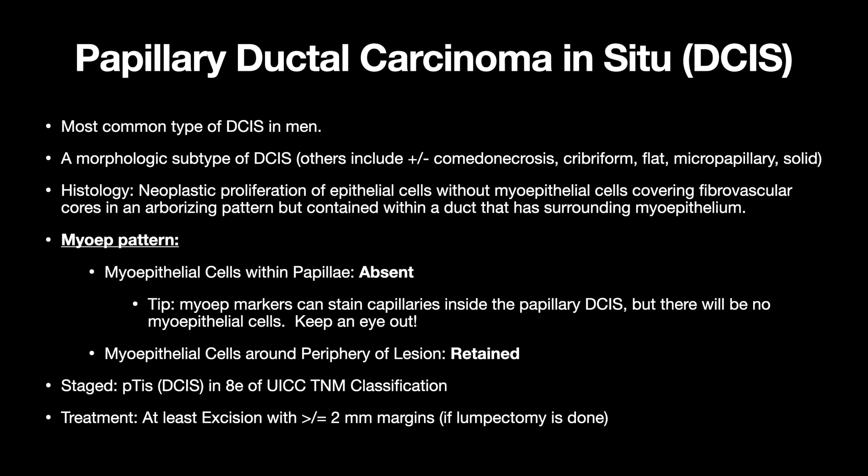Real-life tip: myoepithelial markers like calponin can stain capillaries inside the papillary DCIS, so don't let that fool you because there won't be any myoepithelial cell staining. Staged as pTis DCIS, and treatment is at least excision with greater than or equal to 2 mm margins if a lumpectomy is done.